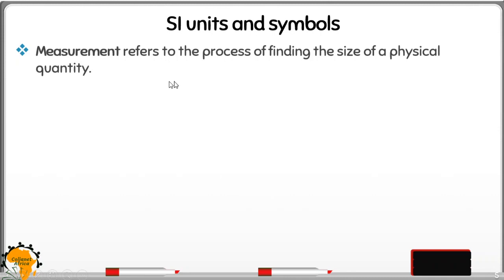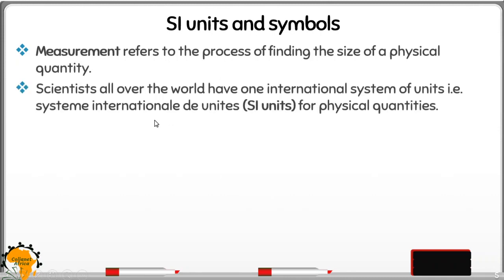We start by defining the term measurement, which refers to the process of finding the size of a physical quantity. Earlier, scientists were using different units according to where they came from, and this brought a lot of confusion. So they came up with one international system that is supposed to be used worldwide.